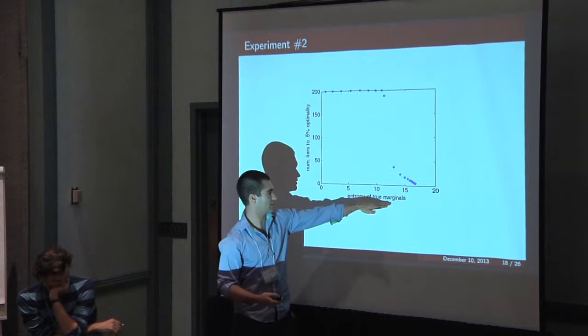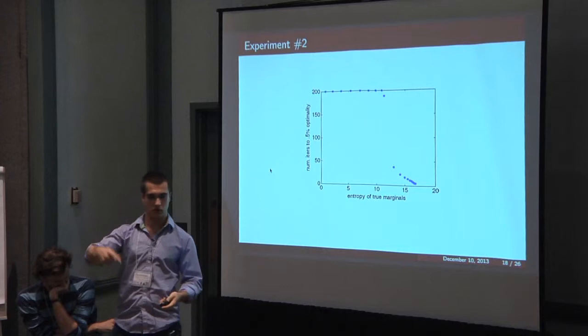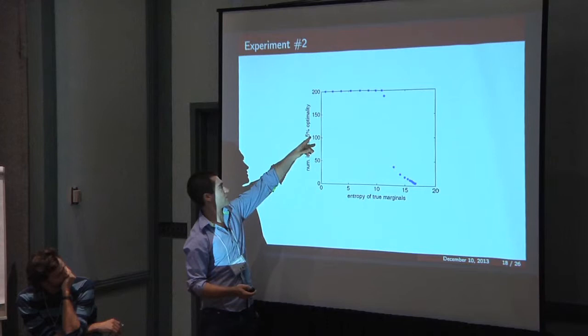So I had this experiment where I vary the entropy of the true marginals. The way you can do that is you basically take a fixed setting of the parameters and you just normalize them by some temperature.